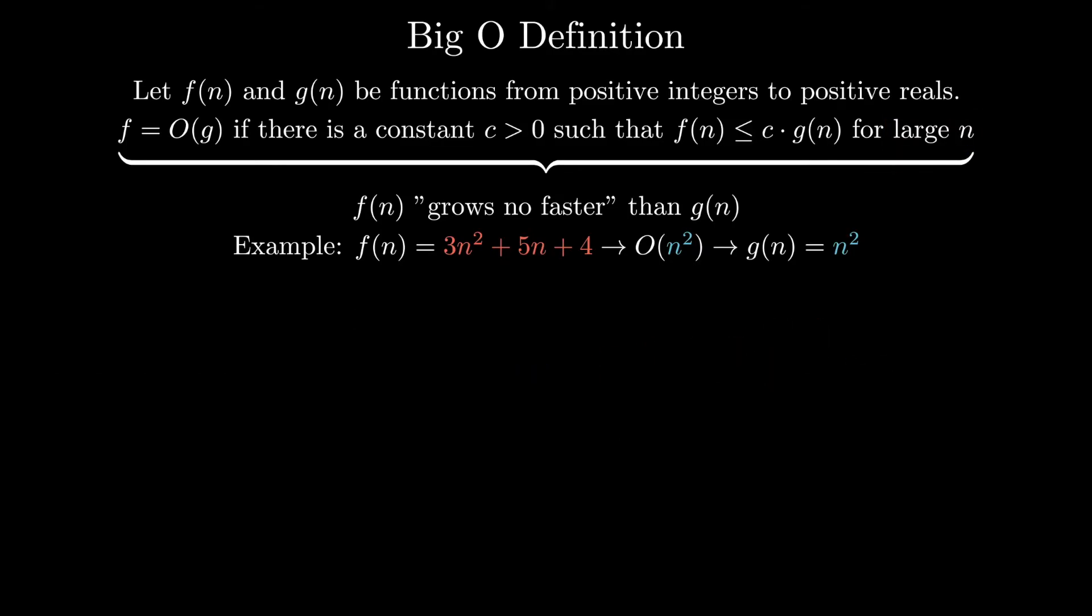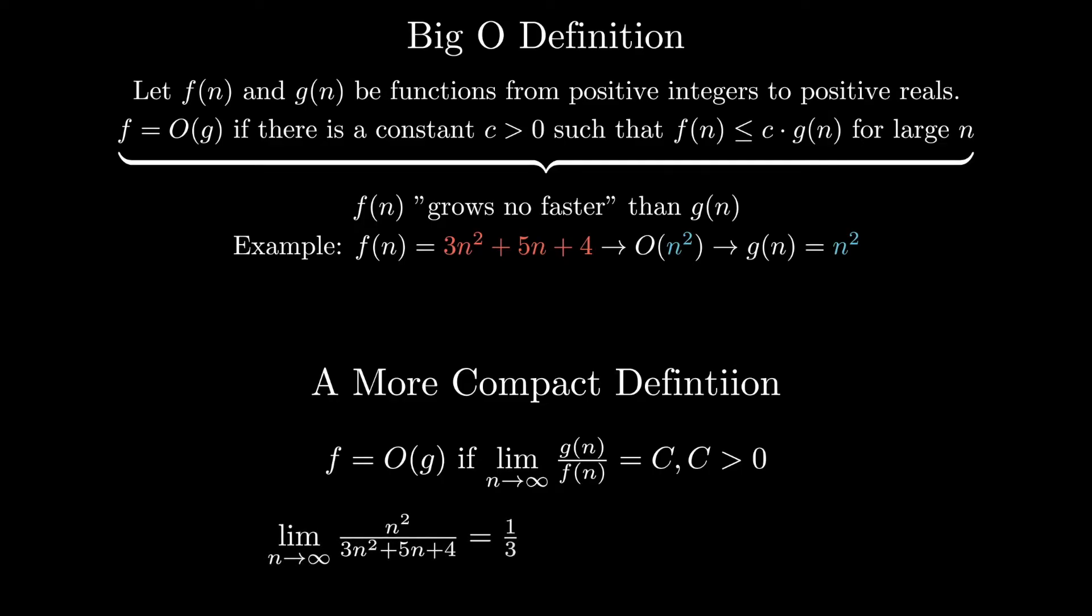For those of you who have seen limits before, another helpful way to think about Big O notation is that if f is equal to O of g, then it must be true that the limit as n goes to infinity of g of n over f of n must be equal to some constant c where c is greater than 0. Once again, with this perspective, the Big O notation for this function must be O of n squared.